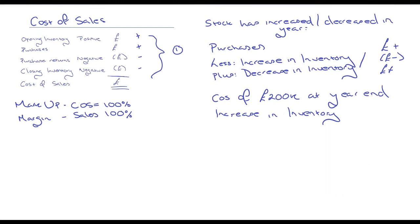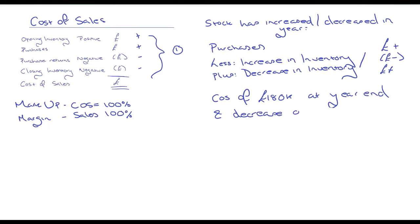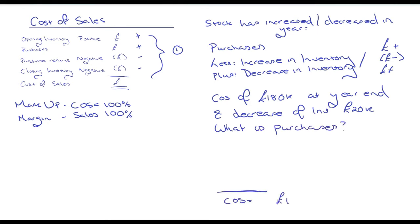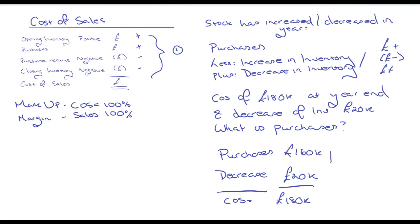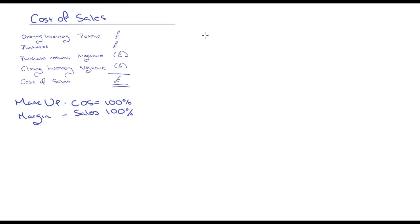Let's do it again with a decrease. If cost of sales is 180k and there's been a decrease in inventory of 20k, what are purchases? A decrease in inventory is a positive in the formula, so: purchases plus 20k equals 180k, making purchases 160k as the balancing figure.